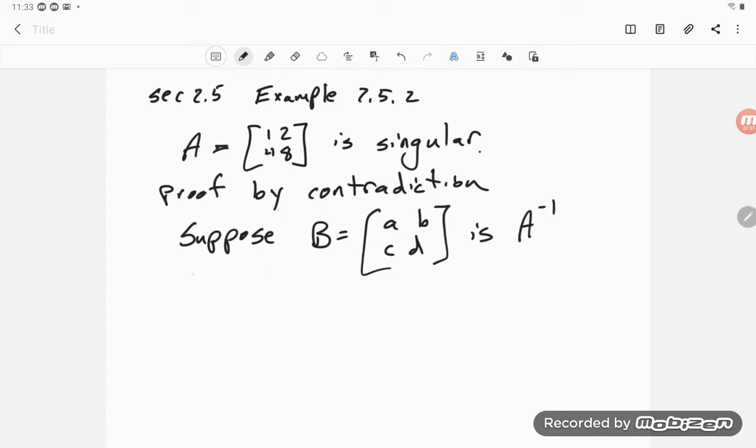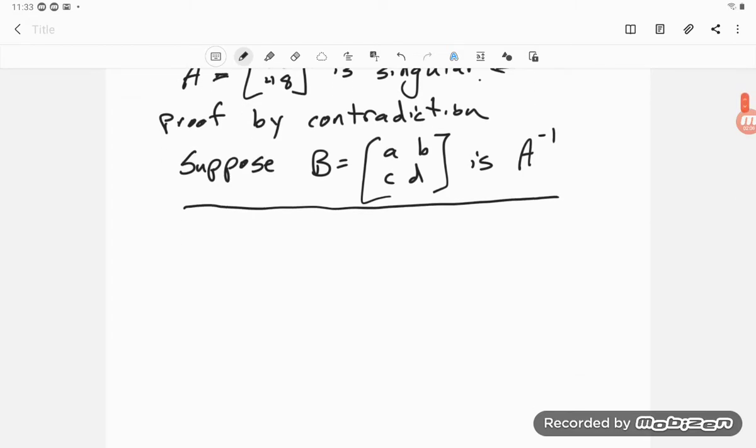The idea of proof by contradiction is we're essentially assuming what we want to not be true. We want A to be singular. If A is singular then A inverse doesn't exist, but we're going to assume it does. So we're assuming the opposite of what we want to prove.